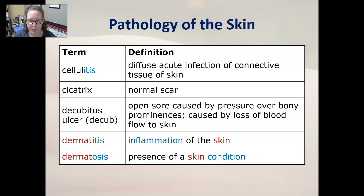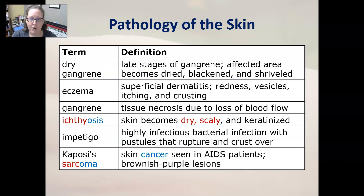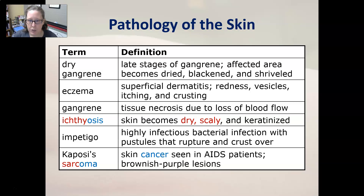Dermatitis is the inflammation of the skin and dermatosis is the presence of a skin condition. Dry gangrene is the late stages of gangrene where the affected area becomes dried, blackened, and shriveled, meaning it's dead or dying. Eczema is a superficial dermatitis with redness, vesicles, itching, and crusting; it often has an allergy component and there are many food sensitivities tied to eczema. Gangrene is tissue necrosis or death due to loss of blood flow to an area.